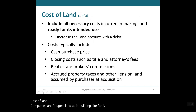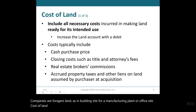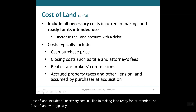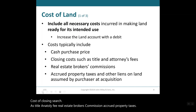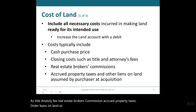Cost of land: Companies often use land as a building site for a manufacturing plant or office. The cost of land includes all necessary costs incurred in making land ready for its intended use. This typically includes the cash purchase price, closing costs such as title and attorney fees, real estate broker's commission, and accrued property taxes or other liens on land assumed by the purchaser at acquisition. Land is always increased with a debit.